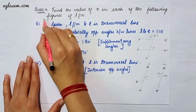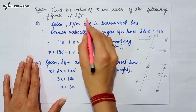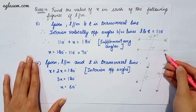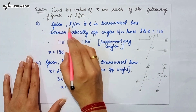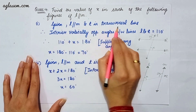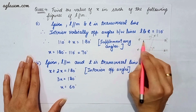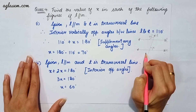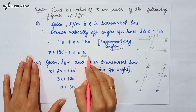Question 4 says: find the value of x in each of the following figures if L is parallel to M. For the first part, given L parallel to M with T as a transversal, the interior vertically opposite angle between lines L and T is 110 degrees. Therefore 110 plus x equals 180 by supplementary angles, so x equals 70 degrees.